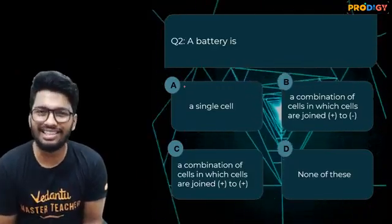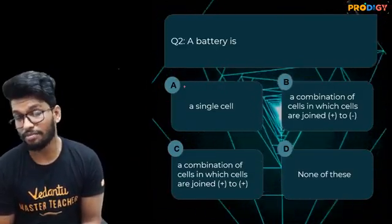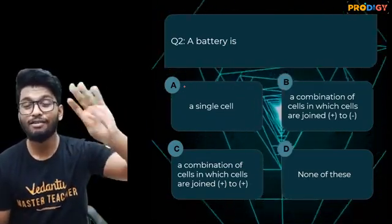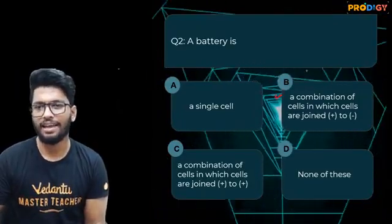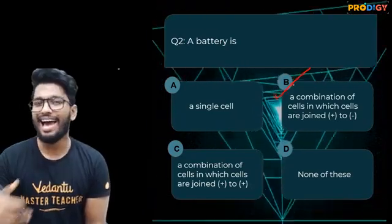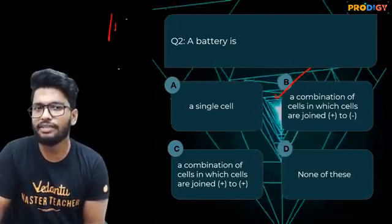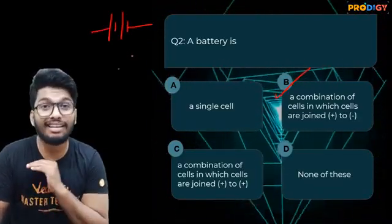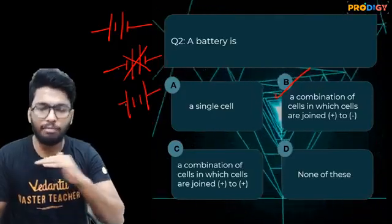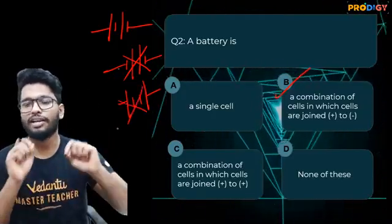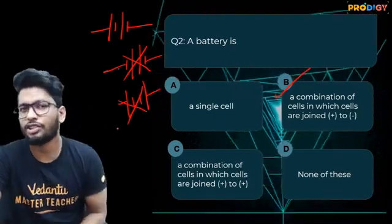Second question: A battery is — A) a single cell, B) a combination of cells in which cells are joined from positive to negative terminals, C) a combination of cells in which cells are joined from positive to positive terminals, or D) none of the above. The answer is option B. A battery is a combination of two or more cells, and when connected, the negative terminal of one cell is always connected to the positive terminal of the next. You cannot connect negative to negative or positive to positive — the circuit would not work.